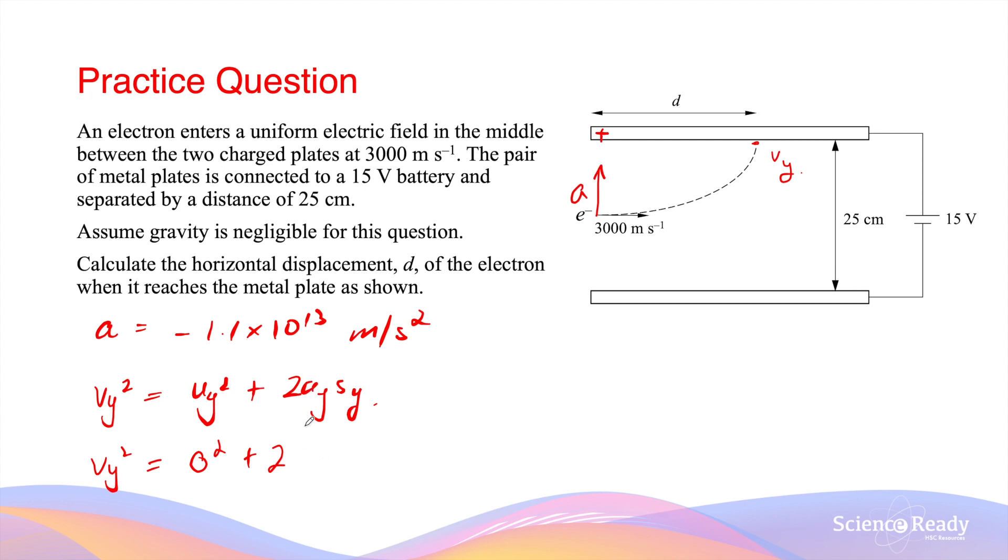Ay is the vertical acceleration. In this case, this will be 1.1 times 10 to the power of 13. Sy will be the vertical displacement between the starting point and the end point of the electron's motion. Because the electron enters the field in the middle between the two plates, the displacement will be half of 25 centimeters, so this will be 0.125 meters. The velocity I calculate here is roughly 1.6 times 10 to the power of 6 meters per second.